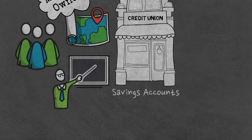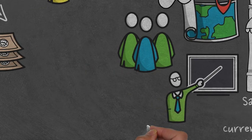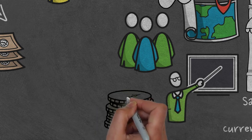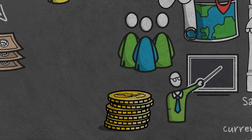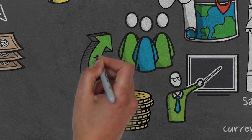Most credit unions offer savings accounts, loans, some offer current accounts, but very few offer mortgages. Although credit unions don't pay interest on savings accounts, if they make a profit, they pay their members a share or dividend at the end of the year.